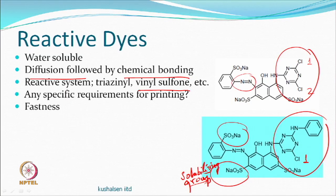If everything has reacted covalently, wash fastness will be excellent — there is no issue there. Light fastness depends on the chemical structure, not on the reaction alone. Many find it difficult to believe that reactive dyed and reactive printed fabrics can give fastness less than 5, but this is because some dye does not react and stays back.